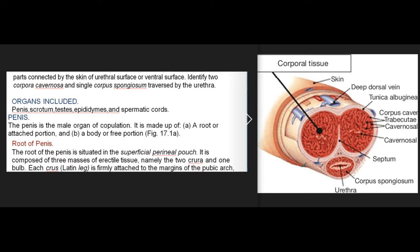Organs included: penis, scrotum, testes, epididymis, and spermatic cords. The penis is the male organ of copulation. It is made up of: A. a root or attached portion, and B. a body or free portion (Fig. 17.1a).